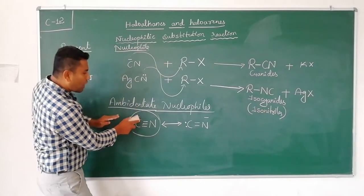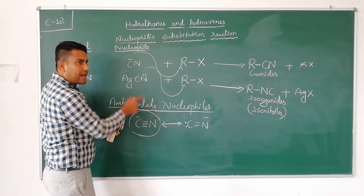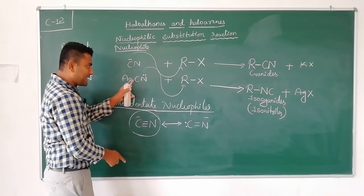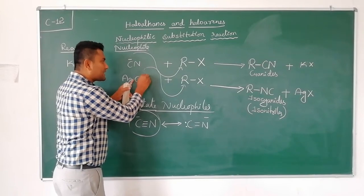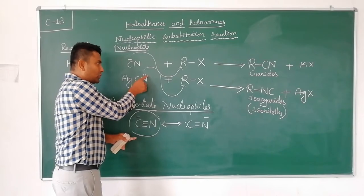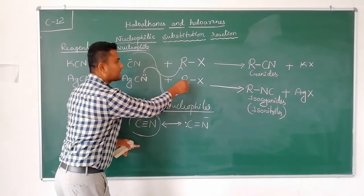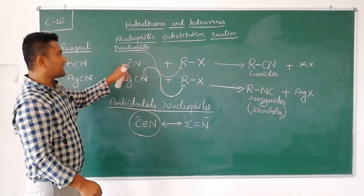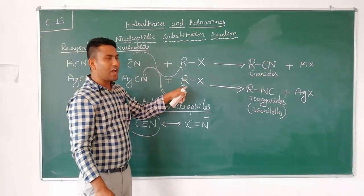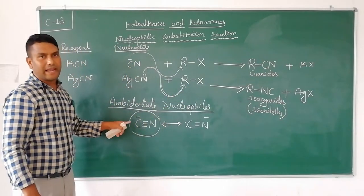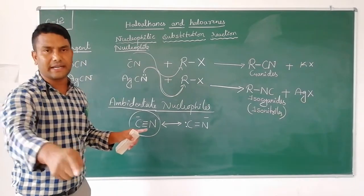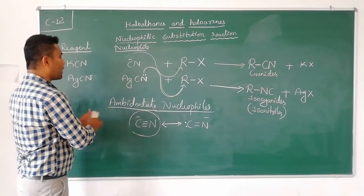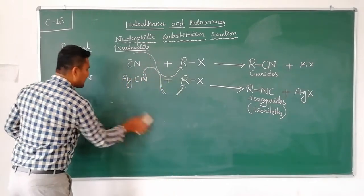So carbon predominantly attacks the R group in free cyanide ion, giving R–C≡N, the cyanides. But if carbon is not free, as in the case of silver cyanide where carbon is bonded to silver and does not carry a negative charge, then nitrogen becomes the nucleophilic center. The lone pair of electrons on nitrogen attacks the R group and gives isocyanides. Thus cyanide has two nucleophilic centers — carbon in one case and nitrogen in the other — making it an ambidentate nucleophile.